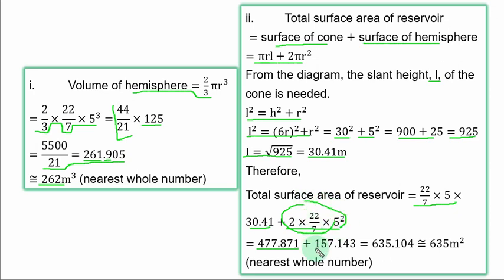If you simplify the part for the hemisphere, you have 157.143. If you add together, you have 635.104. For the nearest whole number, you have 635 square meters as the total surface area of the reservoir.